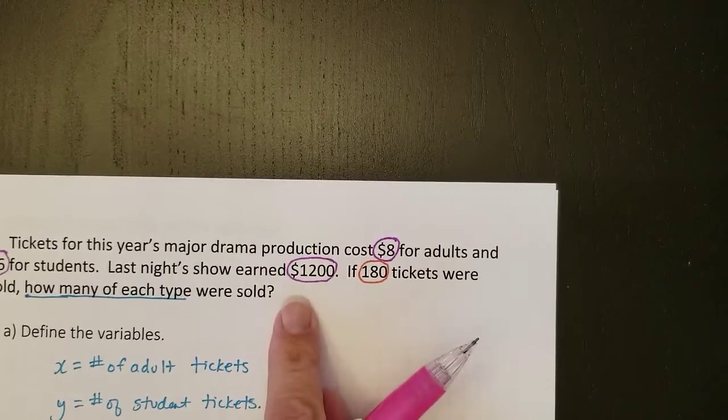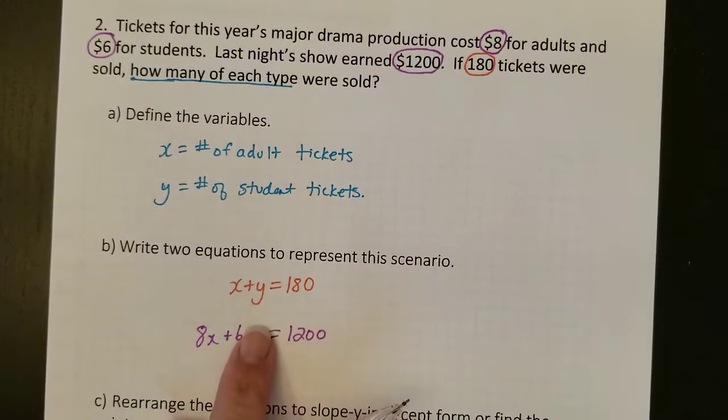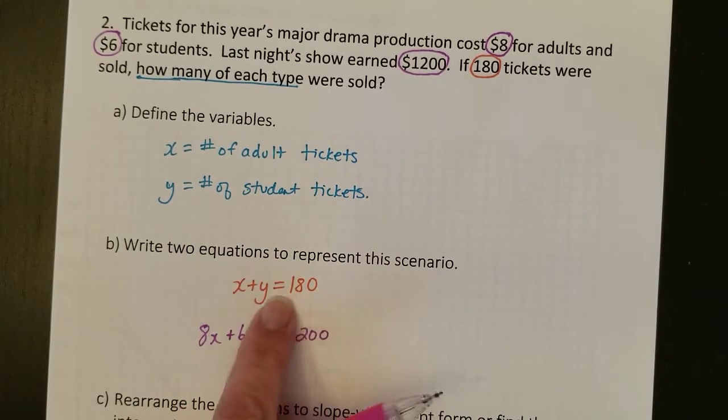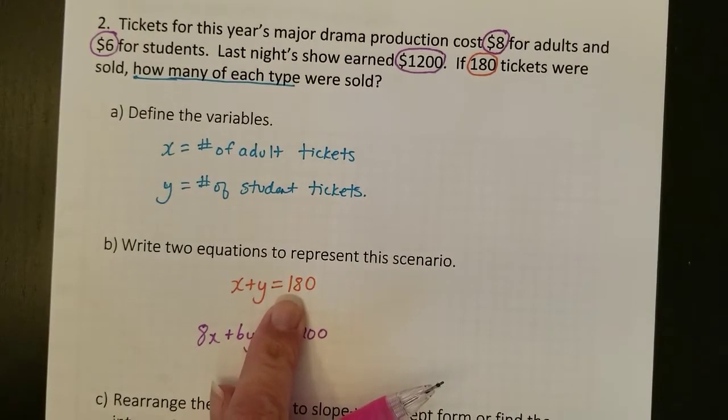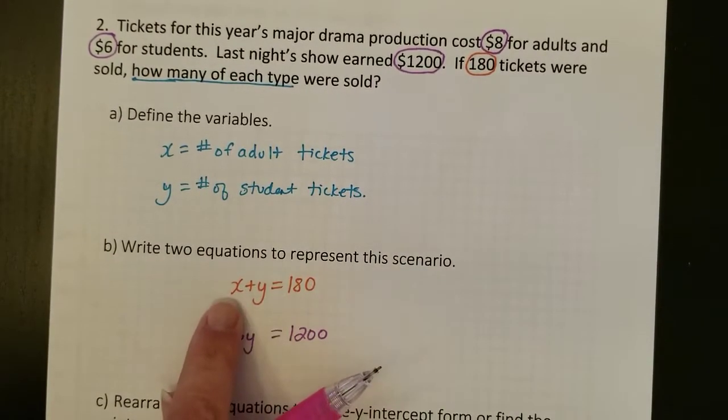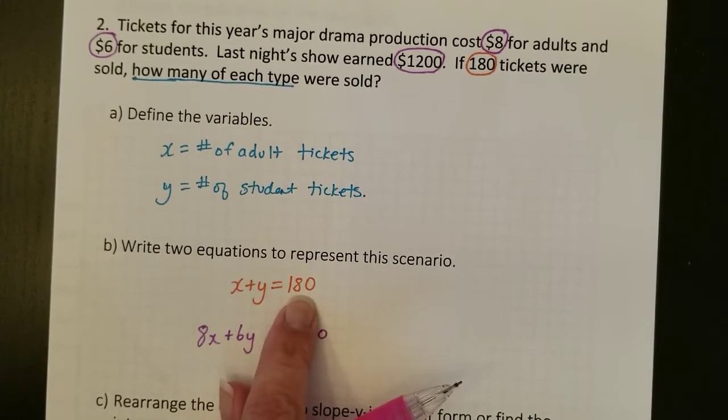So those two different types of information are going to be my two different equations. So here I've created one equation for how many tickets, and you can see I've color coded this like the colors that I've circled, the numbers in the question. So the adult tickets plus the student tickets equal 180 tickets all together.